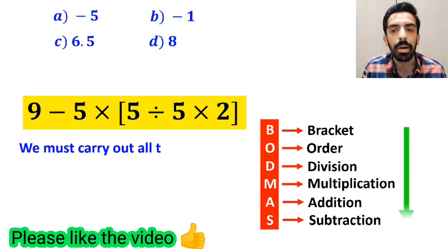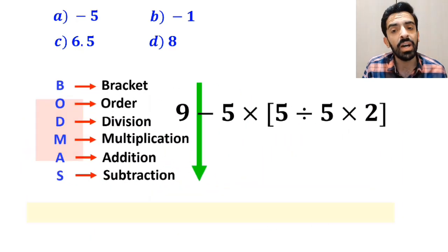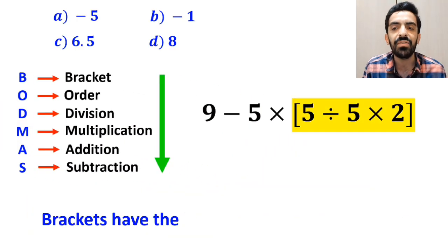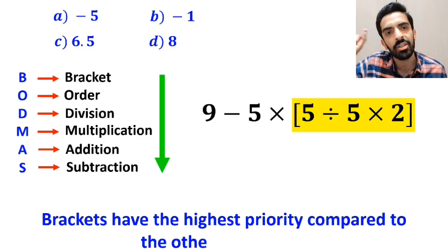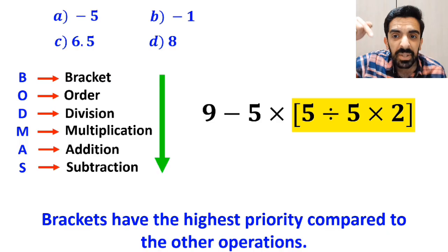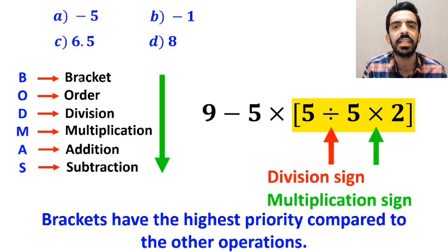We must carry out all the operations exactly in order from top to bottom. First, we start with the expression inside the brackets, because brackets have the highest priority compared to the other operations. Alright, as you can see on the screen, inside the brackets, we have a division sign followed by a multiplication sign.